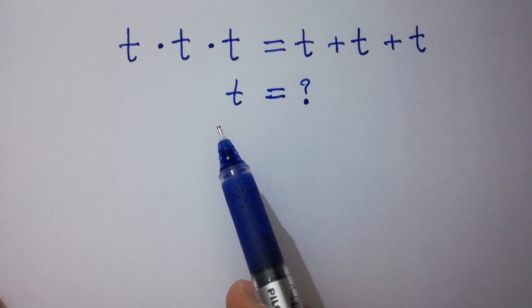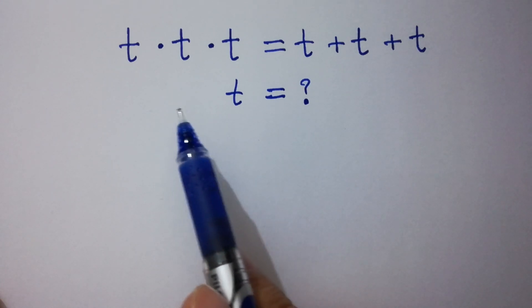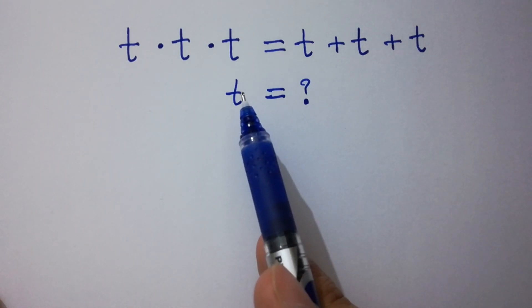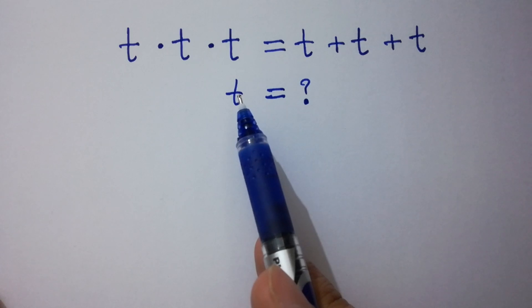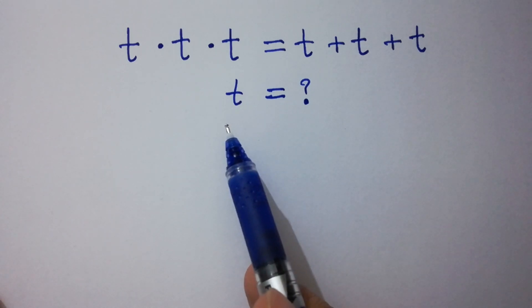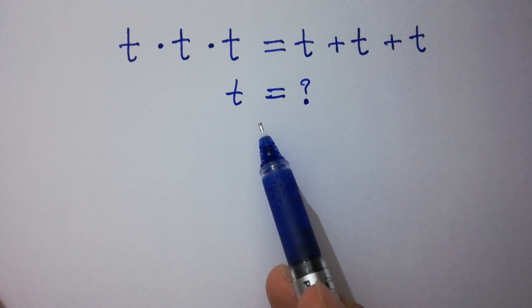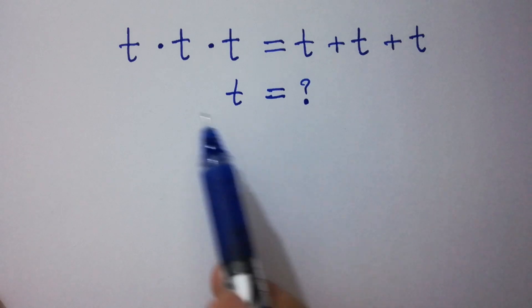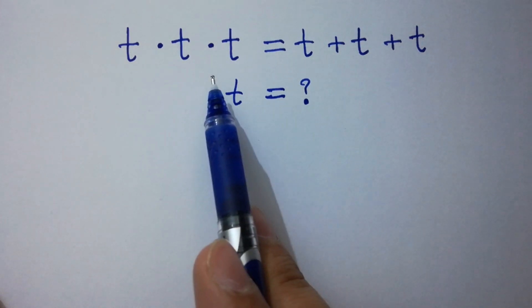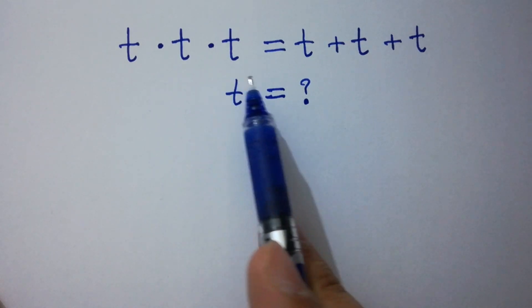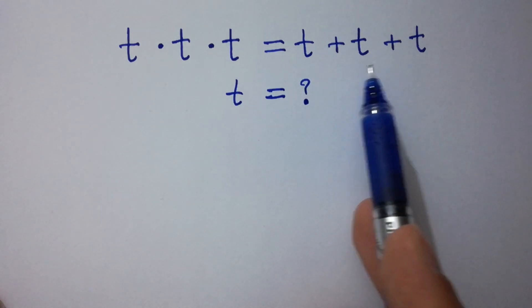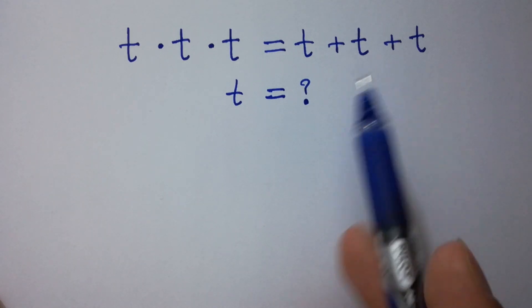Hello friends, we have a nice math olympic algebra problem. Find the value of t if t times t times t equals t plus t plus t.